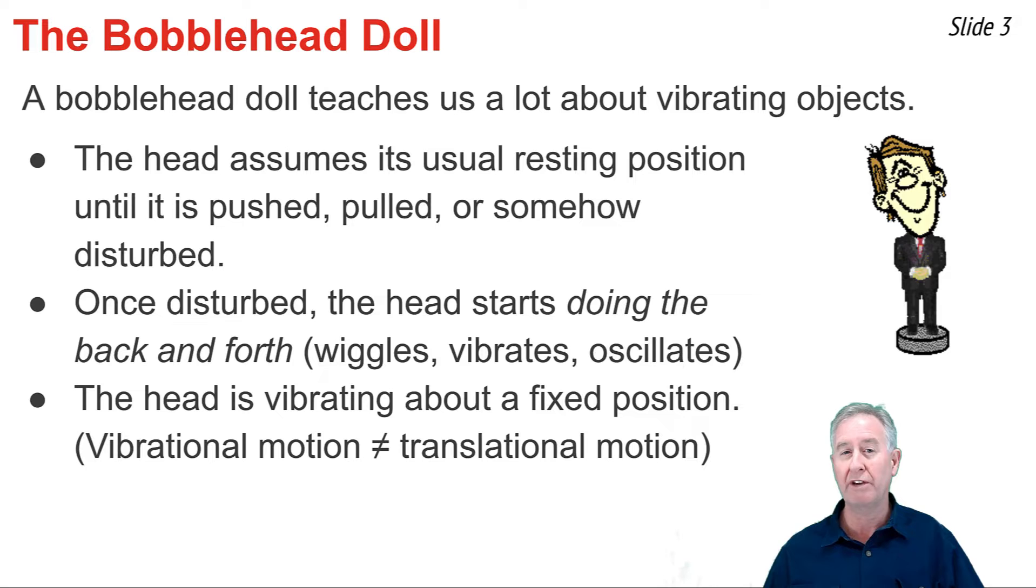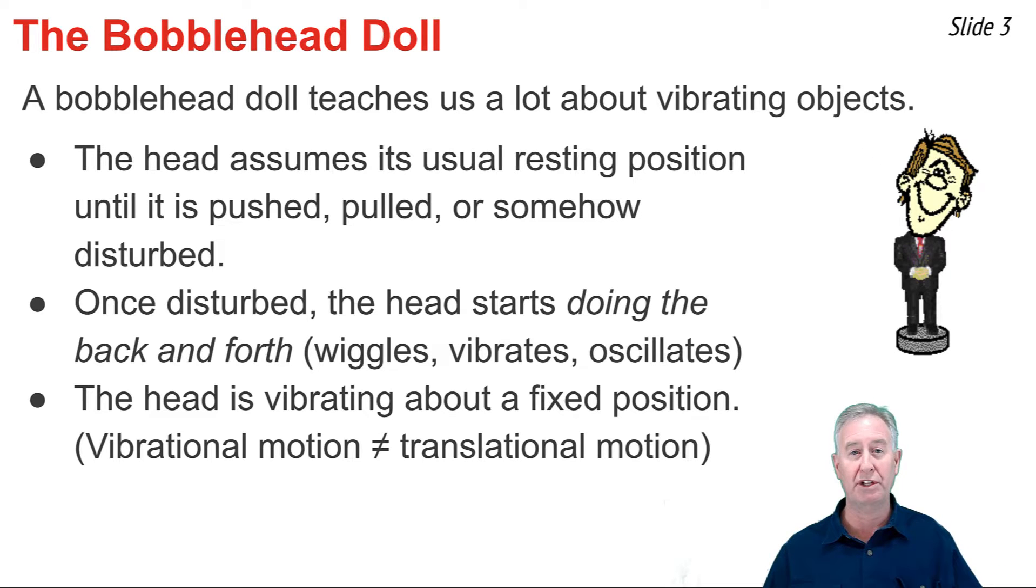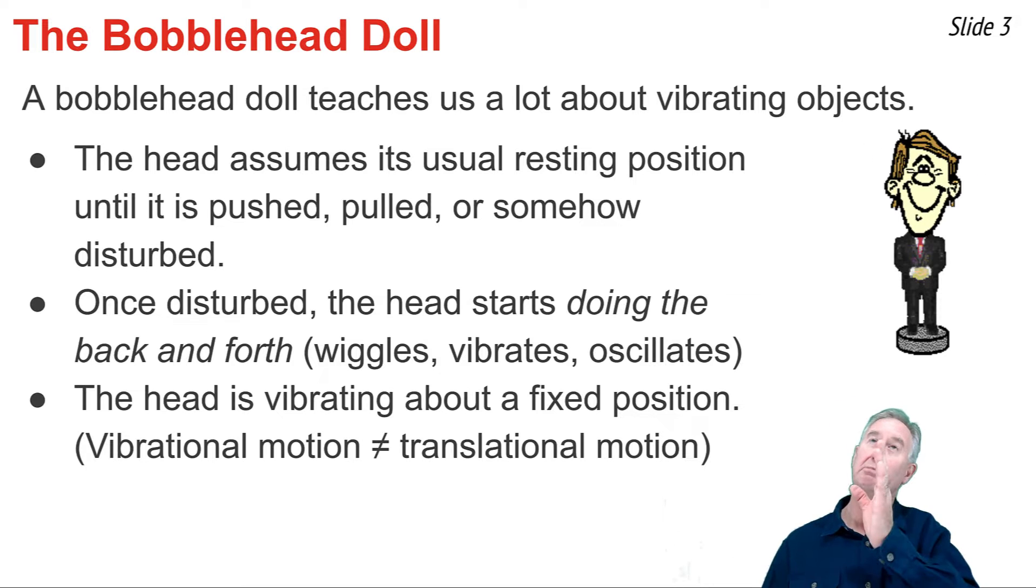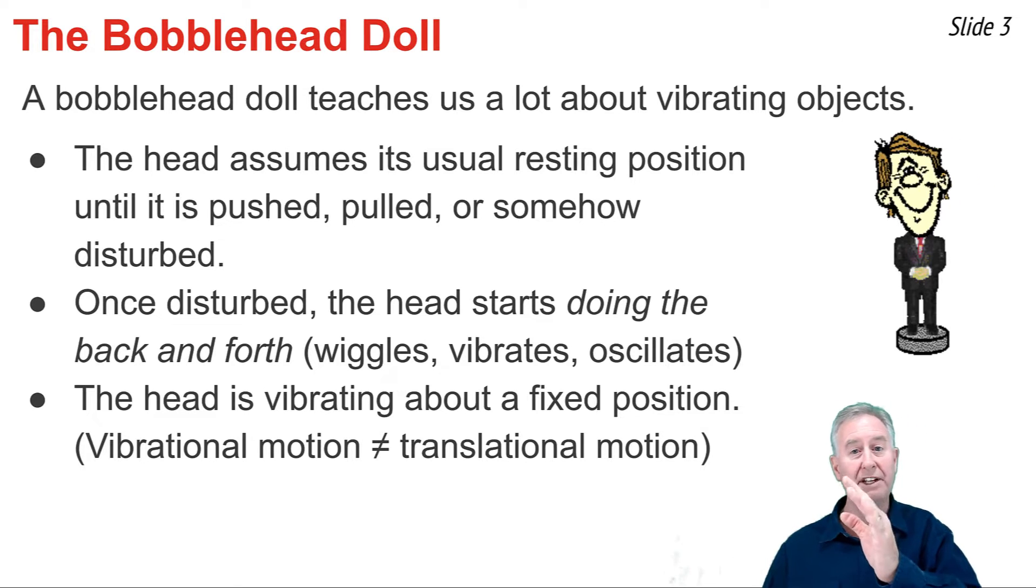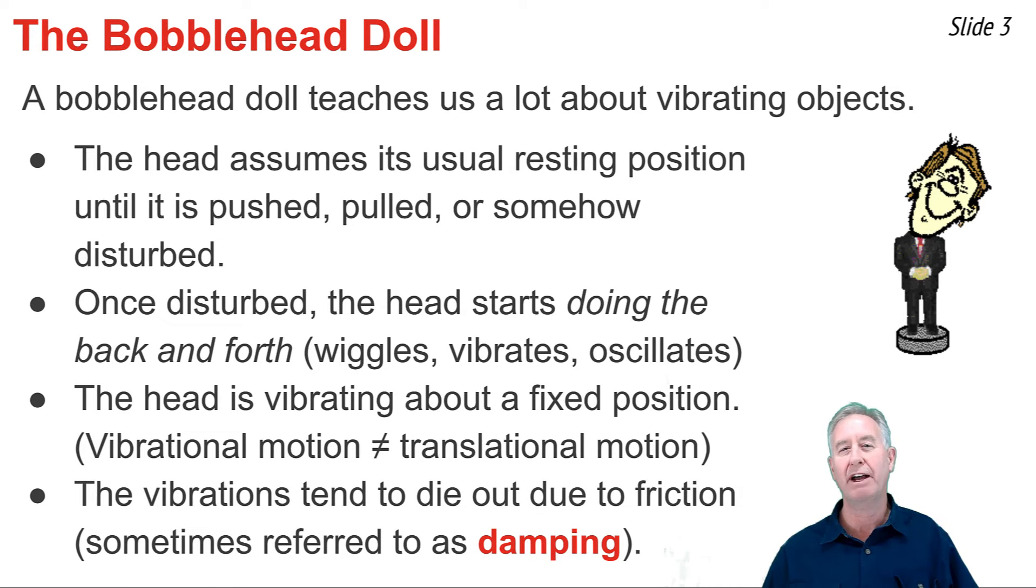Oftentimes, when you give an object like a toy car a push, it will move from one position to another position. That's not vibrational motion. That's translational motion. But the head of a bobblehead doll stays put, only vibrating side to side about that fixed position. Over the course of time, we would notice that the vibrations begin to lessen more and more due to the interaction of that vibrating object with the environment, resulting in forces such as friction or air resistance. We refer to this as damping, and we'll have more to say about it in a future slide.